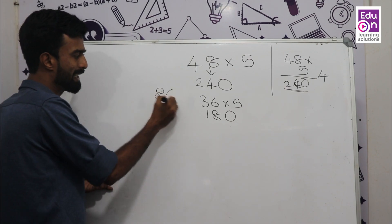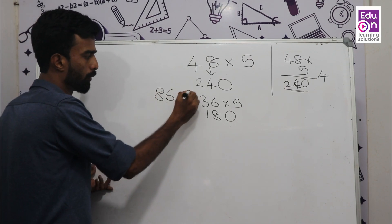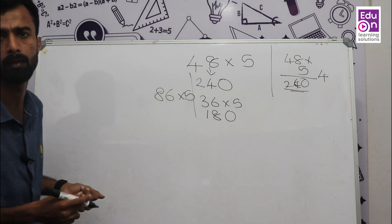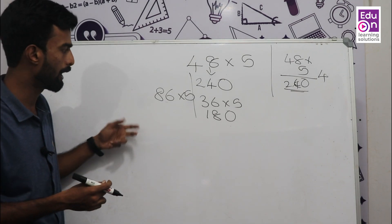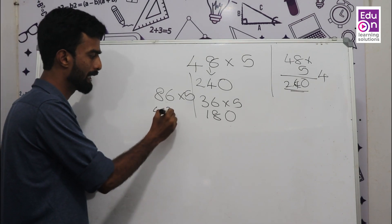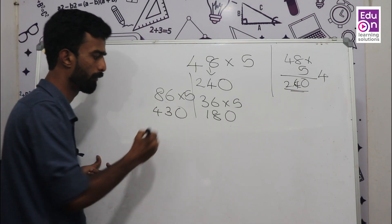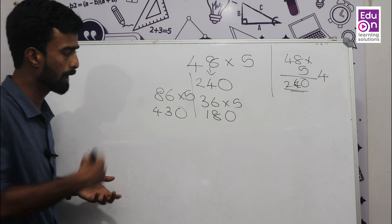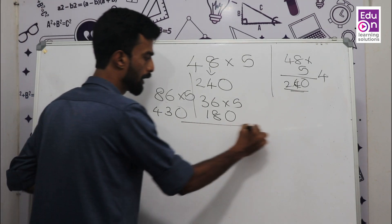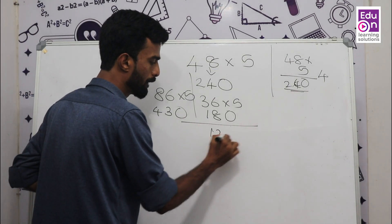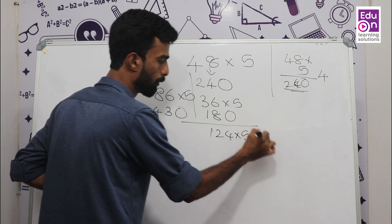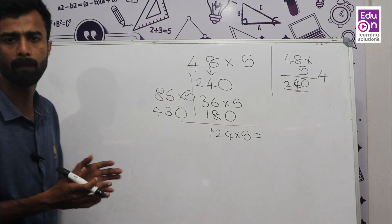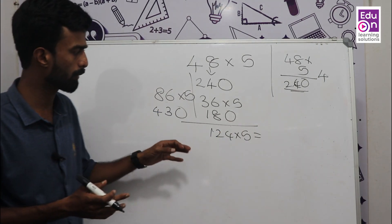Example: 86 × 5. What is 86 × 5? Take half of 86, which is 43, then multiply by 10 to get 430. Another example: 124 × 5 — half of 124 is 62, multiply by 10 to get 620. Easy!